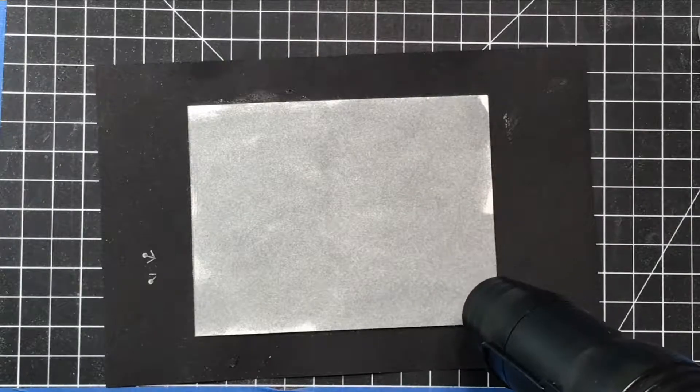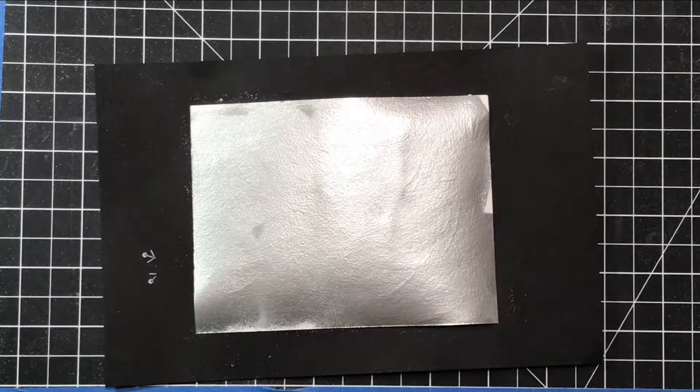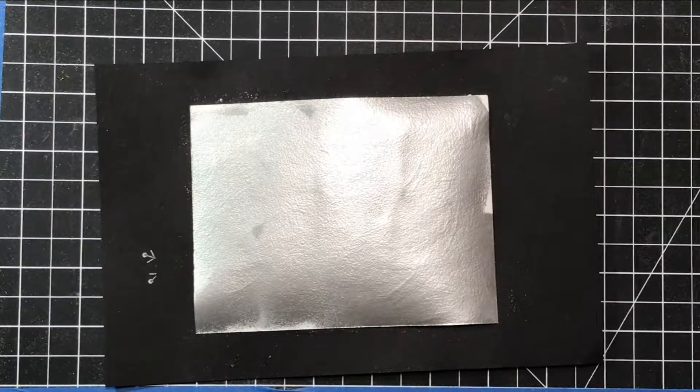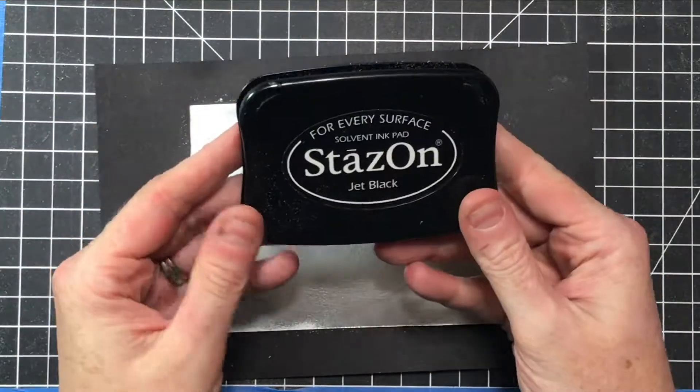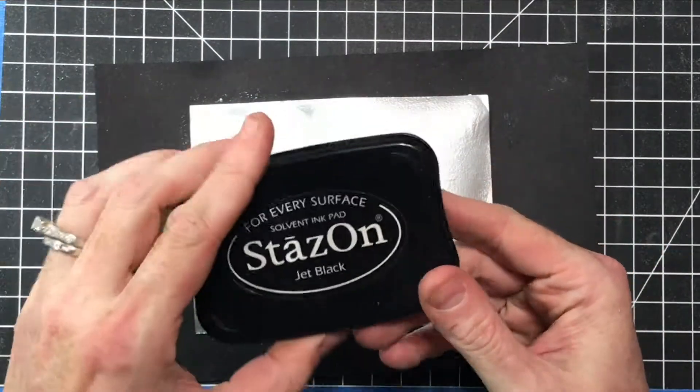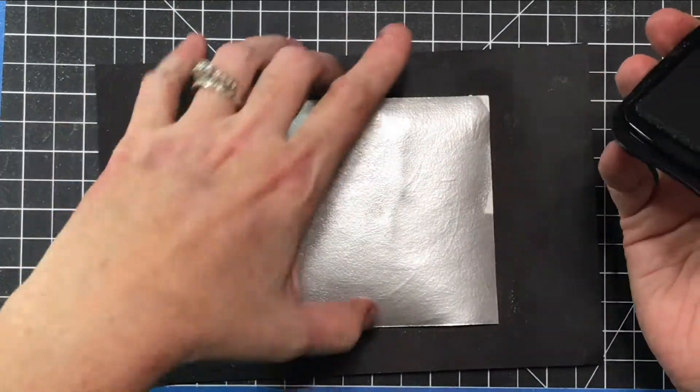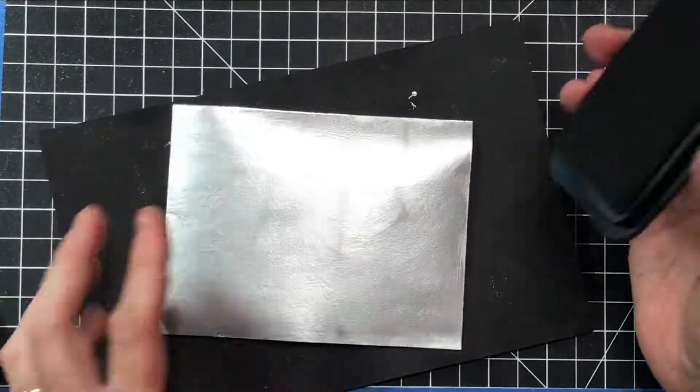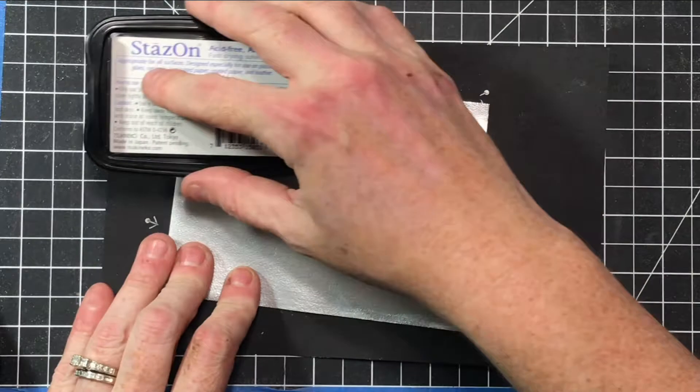I'm gonna go ahead and heat, make it nice and quick and there we go. That's how that turns out. Now for this technique you want to use Stays On jet black ink and depending on how inked up your ink pad is kind of depends on how heavy you press. Mine was pretty dry so I had to press pretty heavy but when we did this at my Stampin'